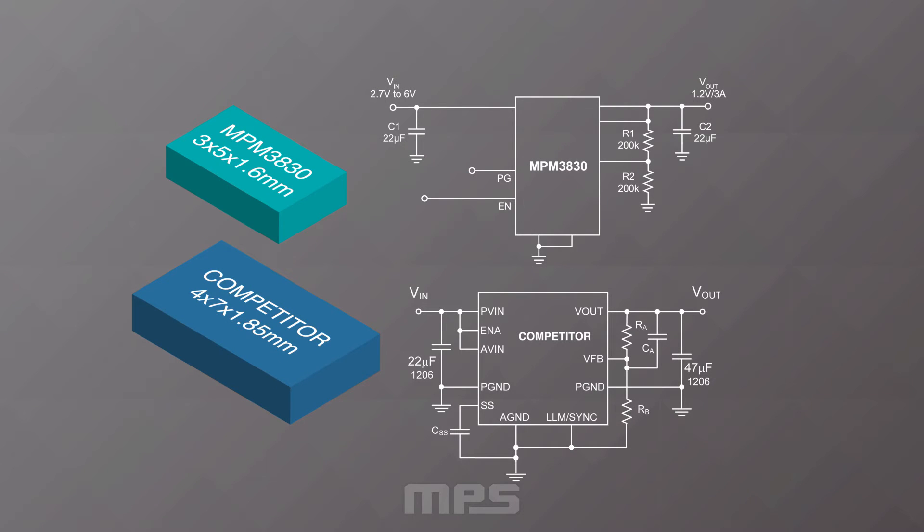Let's take a look at our MPM 3830 for example. In terms of size, our MPM 3830 is almost 50% smaller than the competition. If we compare the typical application circuit, MPM 3830 requires only 4 components while the competition requires 6 components.